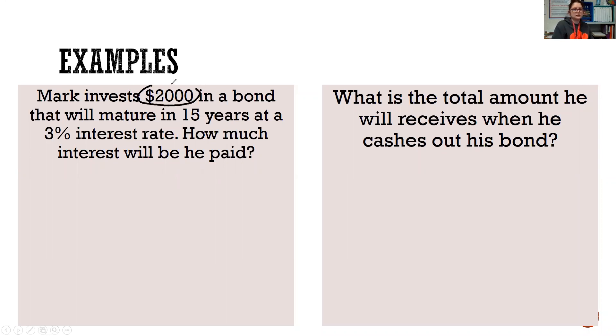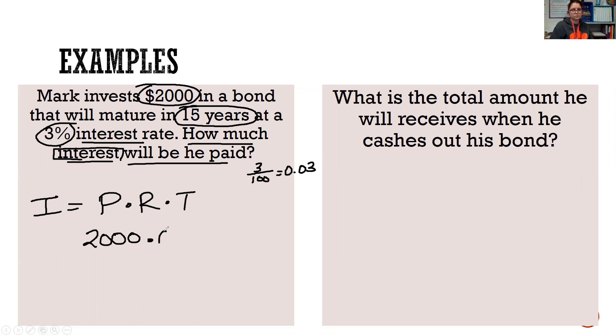Mark invests $2,000 in a bond that will mature in 15 years at a 3% interest rate. How much interest will he be paid? So we're looking for interest again. I equals P times R times T. So our principal is how much he invests. It's $2,000. Our rate is 3 divided by 100 is 0.03. And our time is 15 years. So $2,000 times 0.03 times 15 is $900. So the interest he will earn is $900.